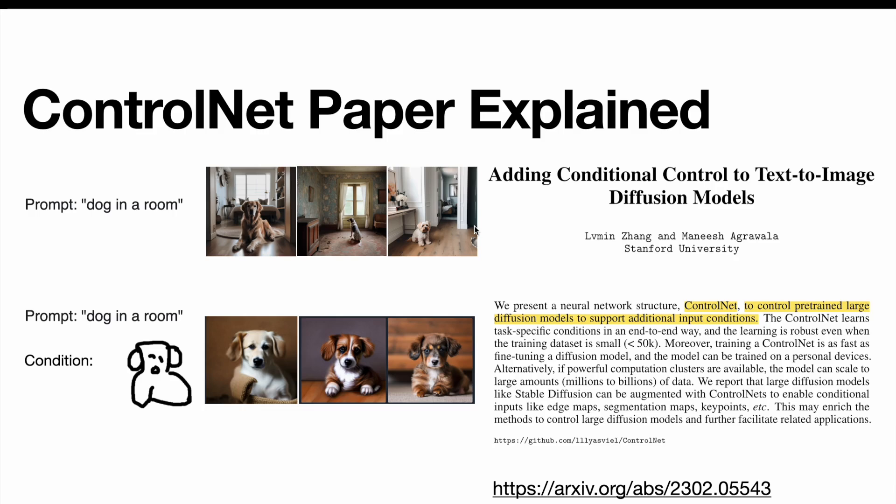Hello guys, today let's talk about ControlNet and have a detailed look at the original paper, adding conditional control to text-to-image diffusion models. So, what is ControlNet? Nowadays, with current pre-trained large diffusion models, we can generate photorealistic images with only text prompts. For example, with a prompt dog in a room, we can get different images with different kinds of dogs in different poses.